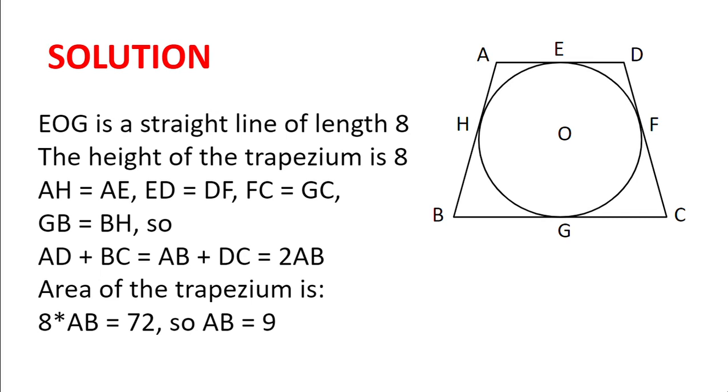Now, because EOG is perpendicular to BC, because angle OGC is 90 degrees, the height of the trapezium is 8.